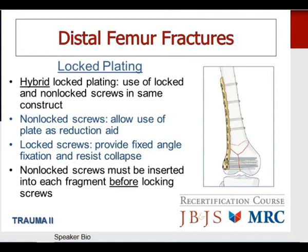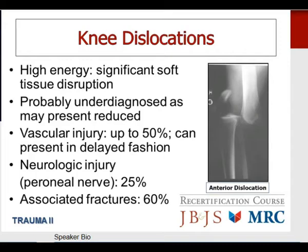Knee dislocations are typically very high-energy associated with significant soft tissue disruption. Remember that knee dislocations are probably under-diagnosed as they may present with the knee already reduced. Vascular injuries are quite common — up to 50% of all knee dislocations will have a significant vascular injury, which can present in a delayed fashion. Neurologic injury is also prominent: the peroneal nerve can be injured about 25% of the time, particularly with lateral dislocations. Associated fractures of the ipsilateral extremity are seen in about 60% of cases.